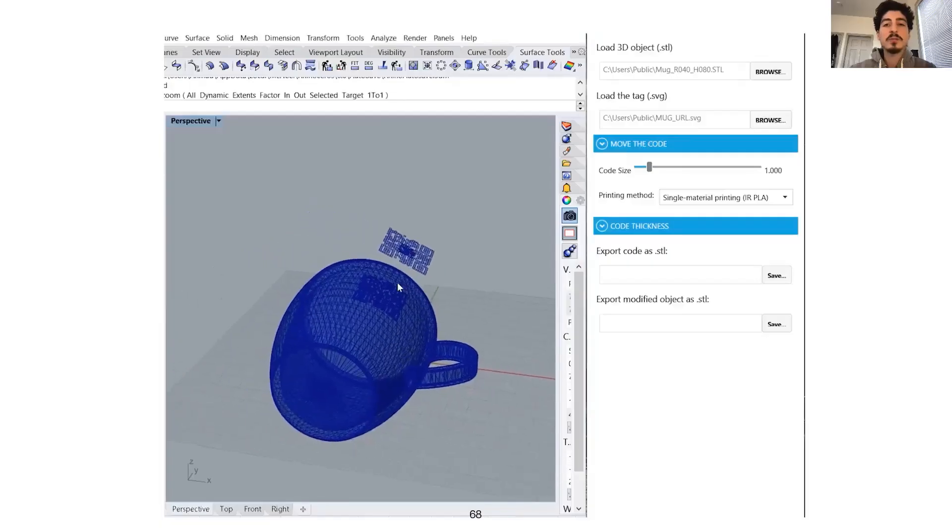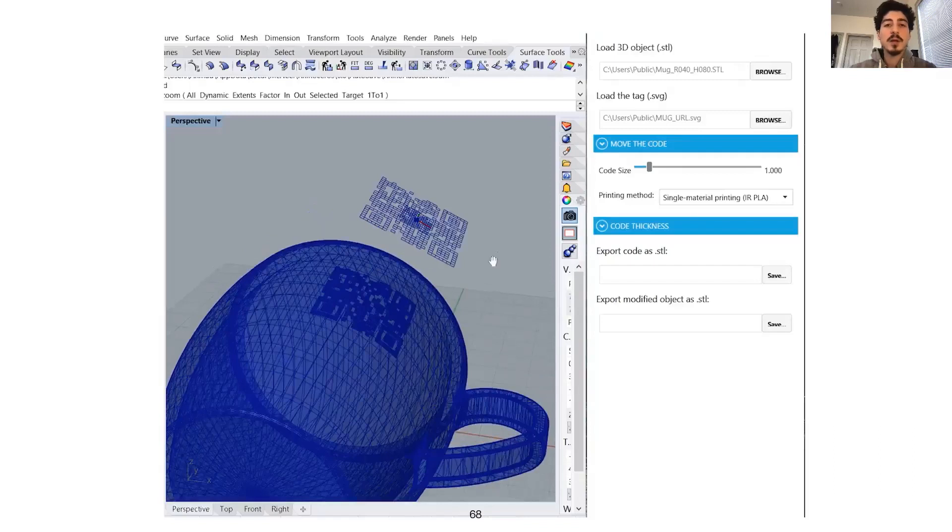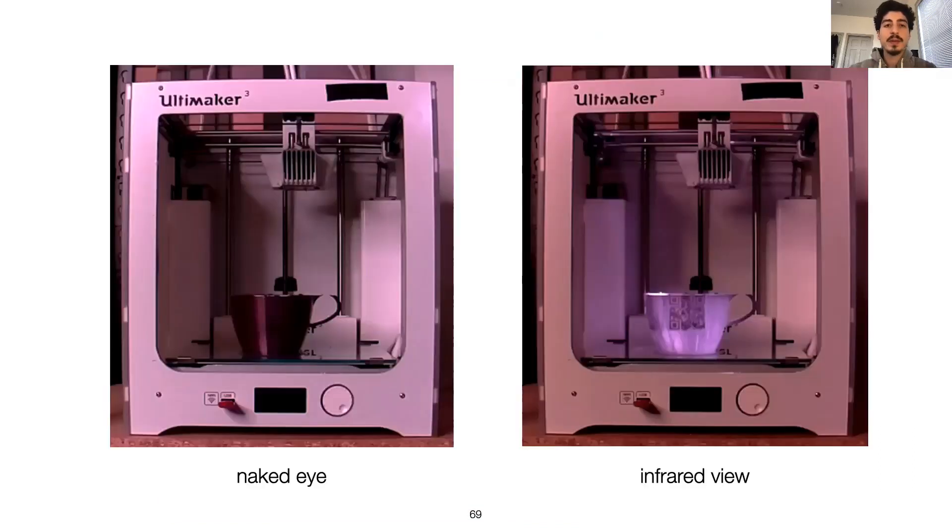To embed this URL into the object, makers can simply use our UI. Next, one can directly 3D print the modified model. Here, you see the print halfway through. On the left, the naked eye view, and on the right, the IR view, which reveals the QR code.